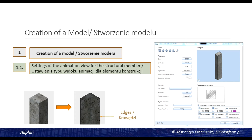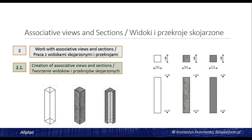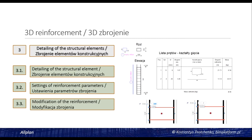Each step will be done on a separate drawing file. As the initial step, we will prepare a model of the structural element and change some parameters to obtain a better view. Secondly, we will prepare the associative views that will be needed: the top view and the elevation. And finally, we will add the reinforcement with the help of the function FF Components in a few clicks.